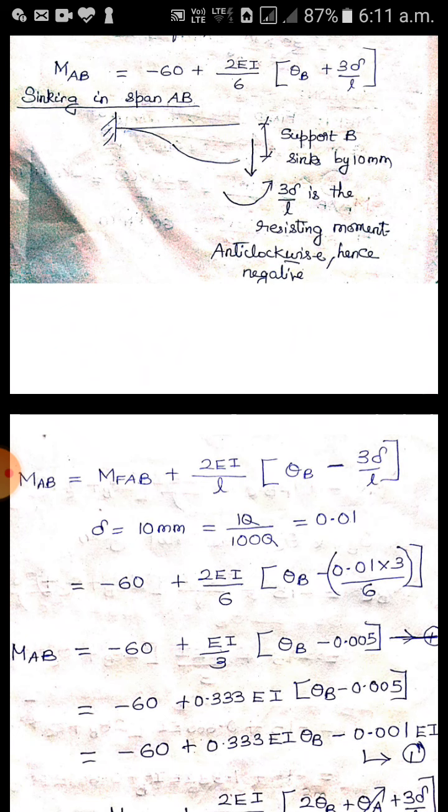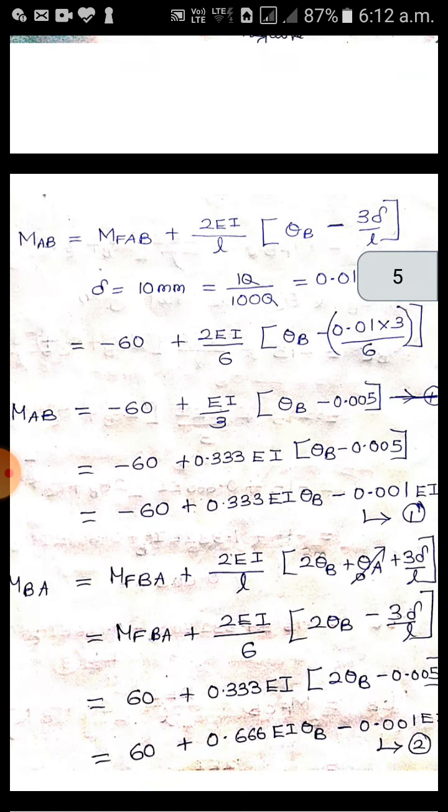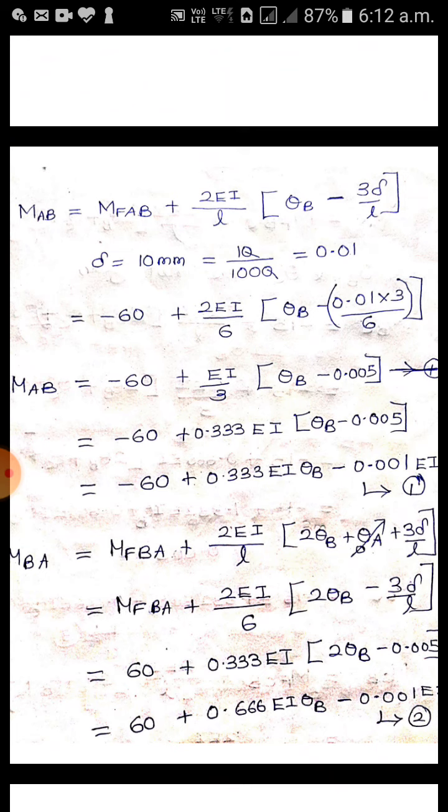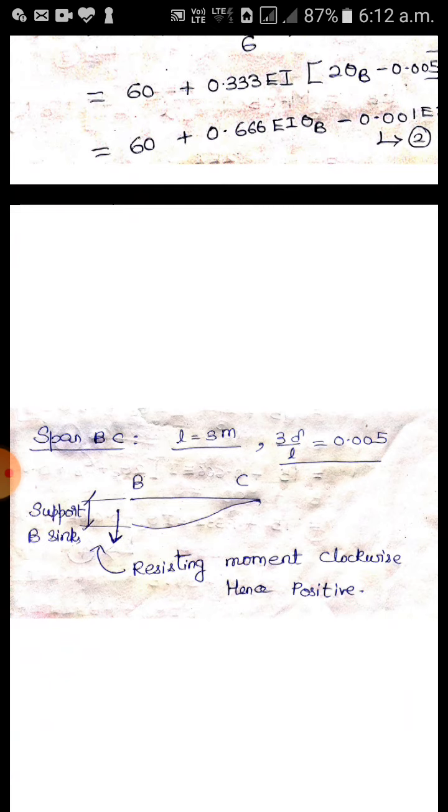So plus 3 delta by L. What is delta? 10 mm, which is 0.01 meters. Substitute that in place of delta. These are 0.01 times 3 by 6, that is 0.005. So M_AB equal to minus 60 plus EI by 3 times theta_B minus 0.005. Simplifying you get M_AB equal to minus 60 plus 0.333 EI theta_B minus 0.001 EI. Now M_BA is MF_BA plus 2EI by L times 2 times theta_B plus theta_A plus 3 delta by L. Again here also minus 3 delta by L. Same span AB. So 3 delta by L is negative for both M_AB and M_BA.